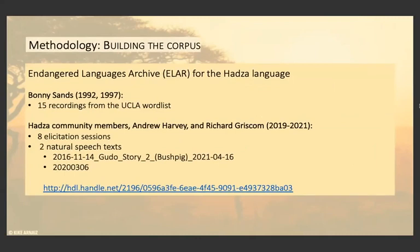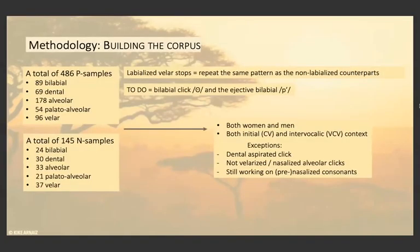First things first — I built a corpus based on the materials found in the Endangered Languages Archive for the Hatsa language, building on previous material from Bonnie Sands and from recent material of the Hatsa community members Andrew Harvey and Richard Criscombe. I found around 600 samples of interest, of which around 500 were pulmonic non-nasal and 145 were nasal. I didn't include the labialized velar stops here, as they repeat the same pattern as the non-labialized counterparts. I still need to carry out the analysis for the bilabial click and the ejective bilabial because I couldn't find them in my actual corpus.